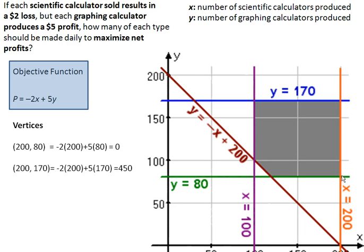The next one, 200 and 170. So if you make those 200 scientific calculators, multiply that by negative 2, the 170 times the 5 gives your profit of 450. Much better than making no money. I'm still holding out for the big bucks.